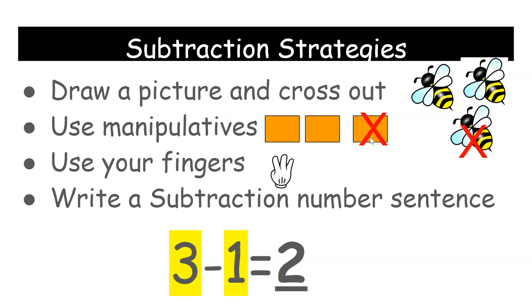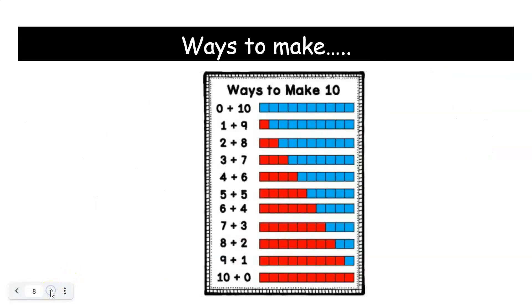And use your fingers. So put up three fingers, take one away to represent the problem. And then finally, write a subtraction number sentence: 3-1=2. So these are our subtraction strategies.